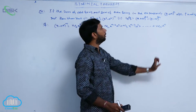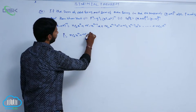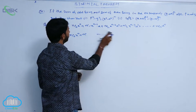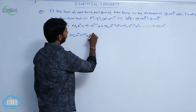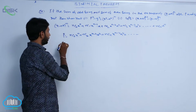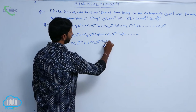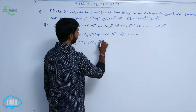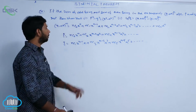The sum of odd terms is represented as p and the sum of even terms is represented as q. That is, p = nC0 * x^n + nC2 * x^(n-2) * a² + nC4 * x^(n-4) * a^4 + and so on. And q = nC1 * x^(n-1) * a + nC3 * x^(n-3) * a³ + nC5 * x^(n-5) * a^5 + and so on. Here p means the sum of odd terms and q means sum of even terms.